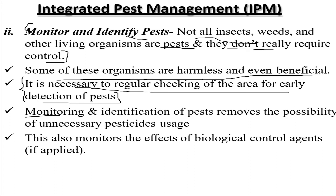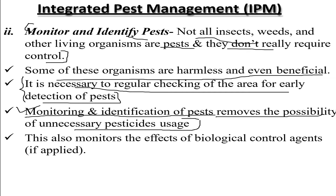Monitoring and identification of pests removes the possibility of unnecessary pesticide usage. Early detection of pests reduces the usage of pesticides and allows us to plan alternative methods to reduce pest growth. It also monitors the effects of biological control agents when applied.